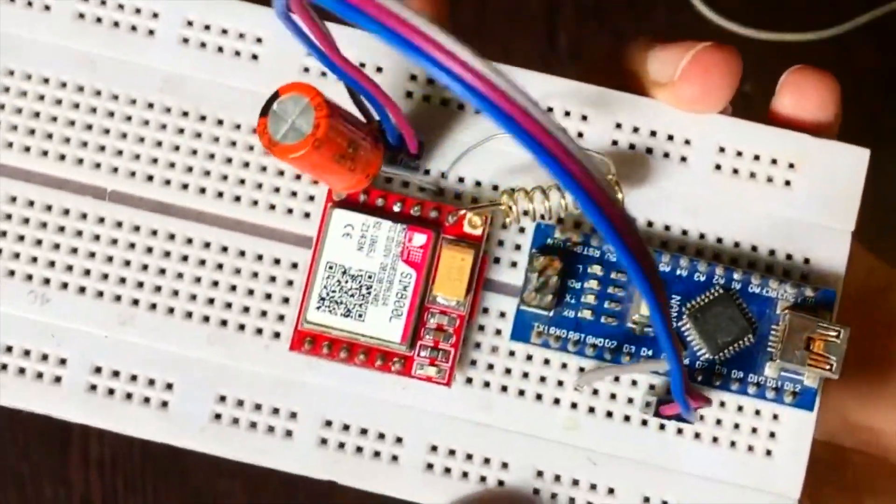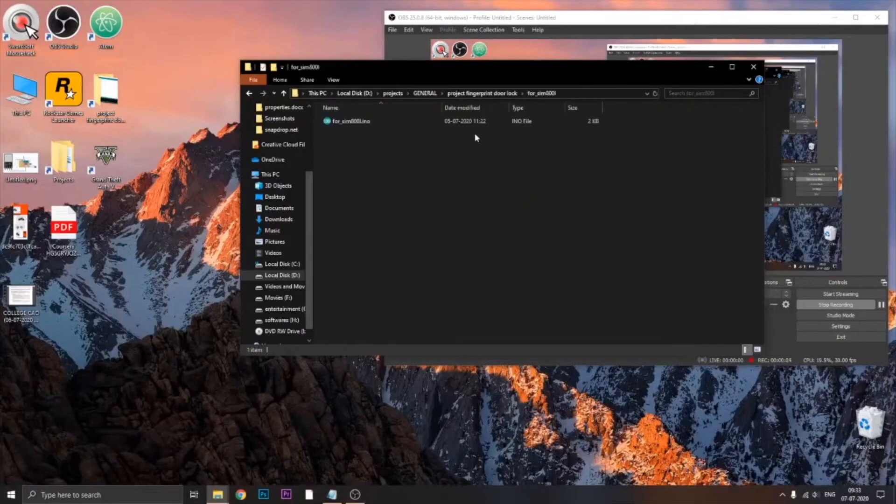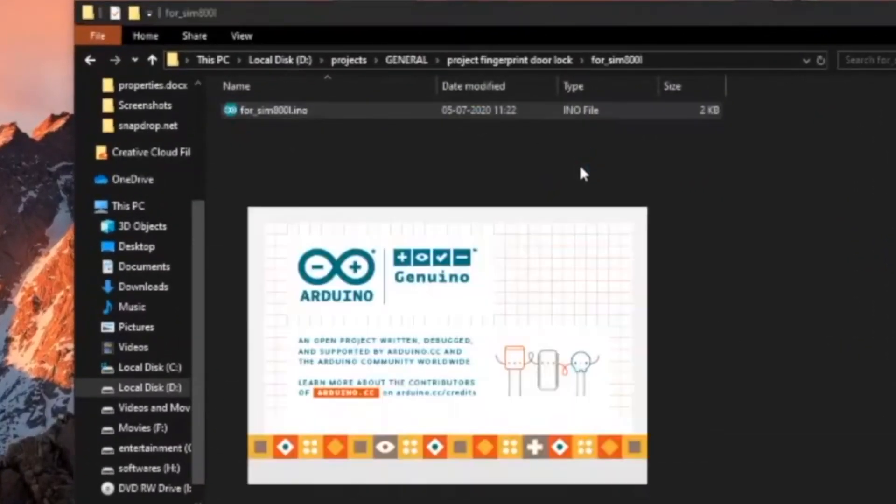Now connect the USB port of the Nano to your PC or laptop. Open the file which is available in the description below. Download it and then open it.